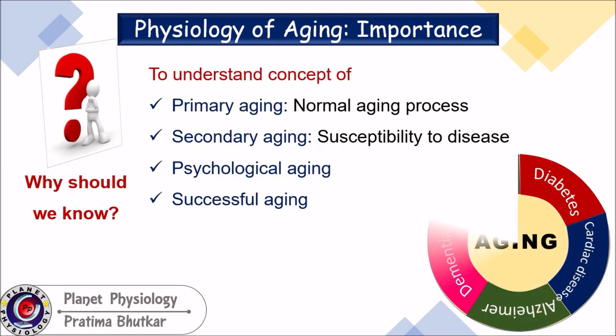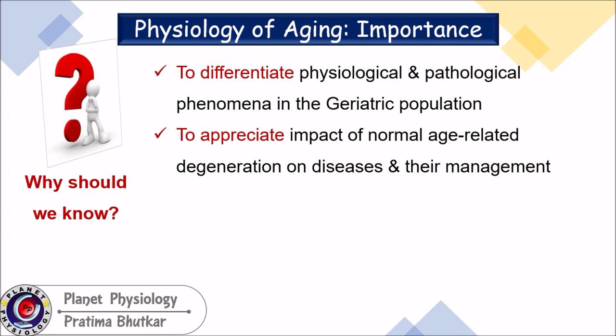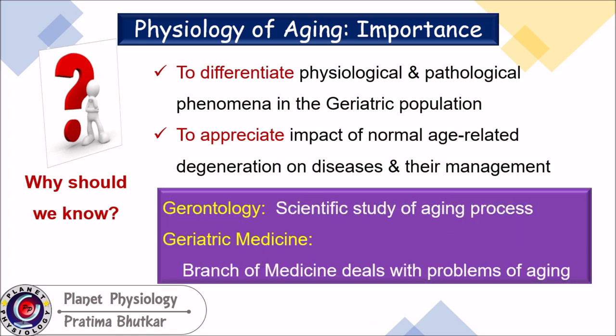Knowing the physiology of aging helps us understand the concept of primary aging, which is the normal aging process; secondary aging, where there is susceptibility to various age-related diseases like cancer, diabetes, cardiovascular diseases, Alzheimer's, and dementia; and psychological aging, as well as successful aging. This knowledge also helps differentiate physiological and pathological phenomena in the geriatric population and appreciate the impact of normal age-related degeneration on diseases and their management. This field of gerontology has a separate branch in medicine called geriatric medicine.